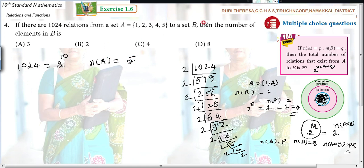B is, then you have to find out B. So 2 to the power of N of A into N of B, that is equal to 2 to the power of 10. N of A cross B is nothing but N of A into N of B. Instead of writing like this, you can write like this also.